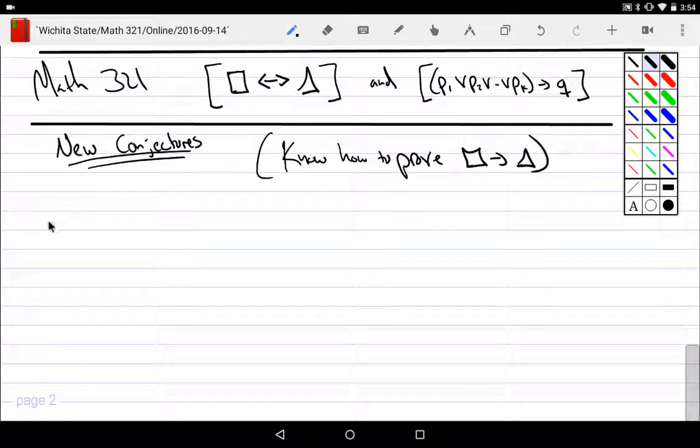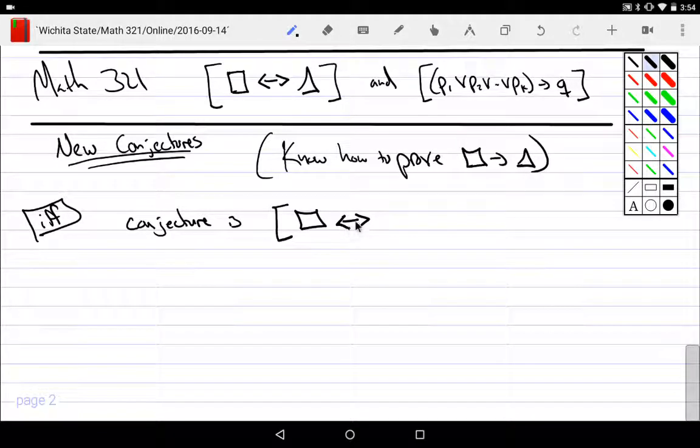The first thing that we can talk about is the idea of an if and only if biconditional. So if my conjecture is that, please prove that left if and only if right, if that's my conjecture, how do I do that?